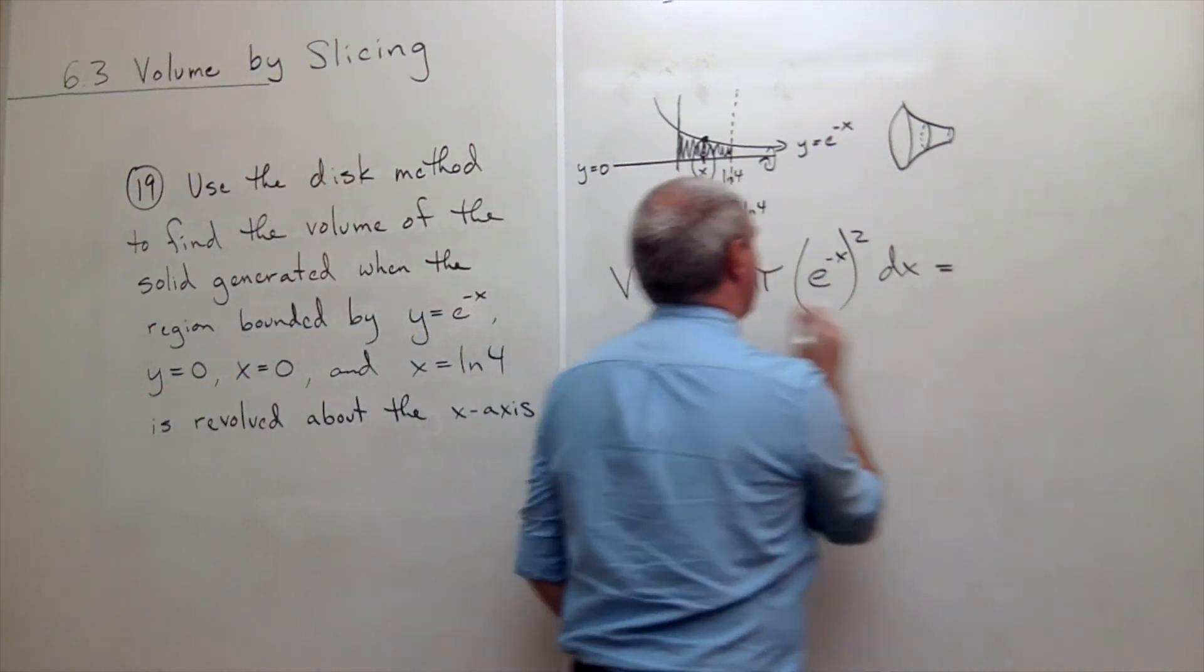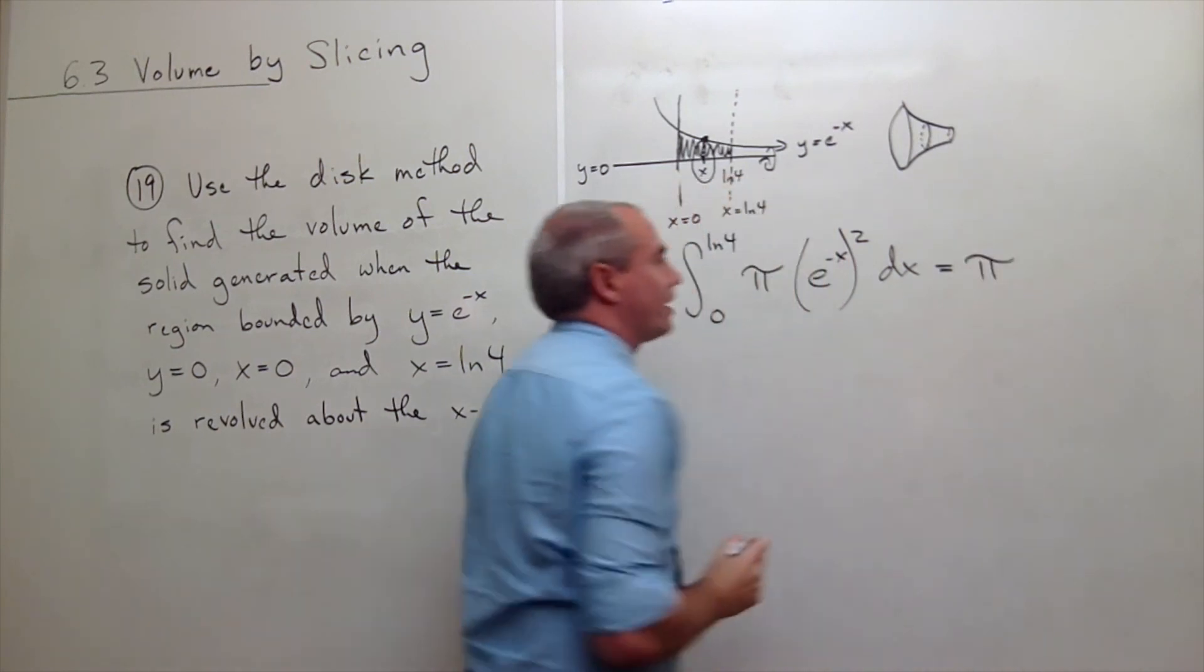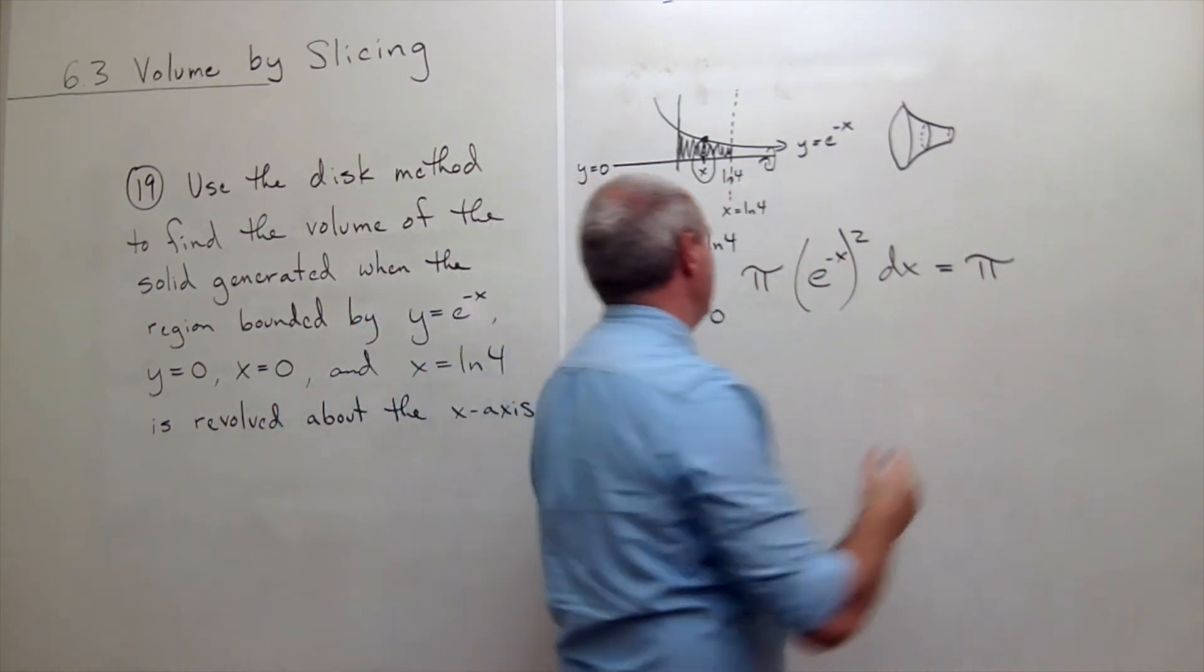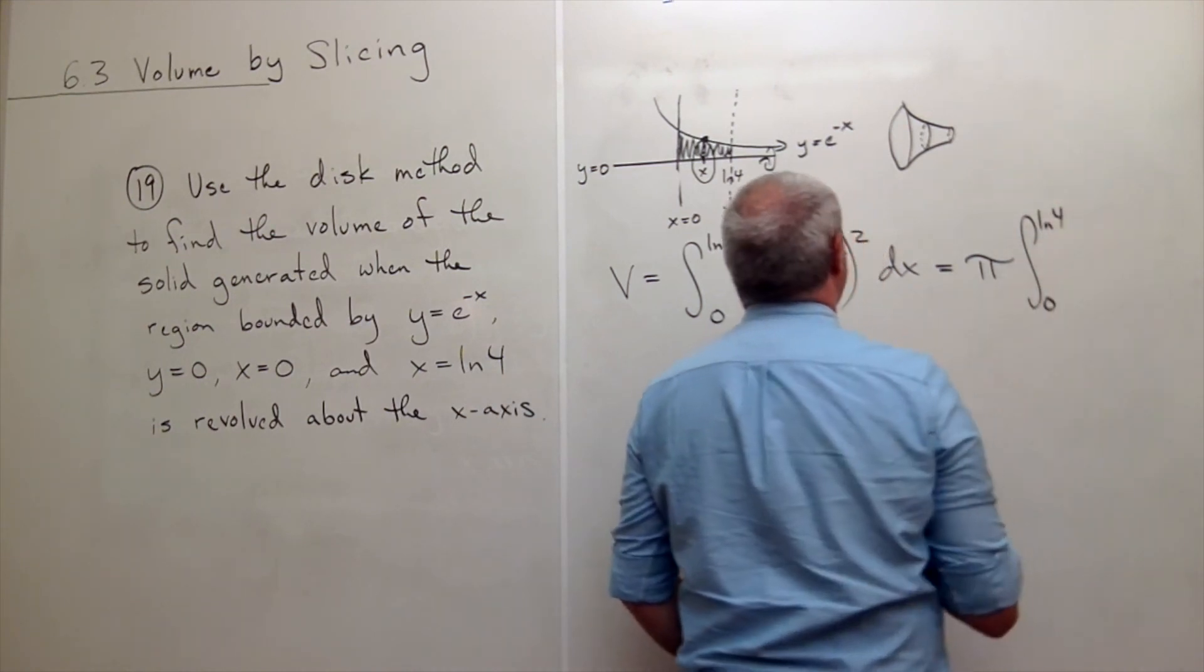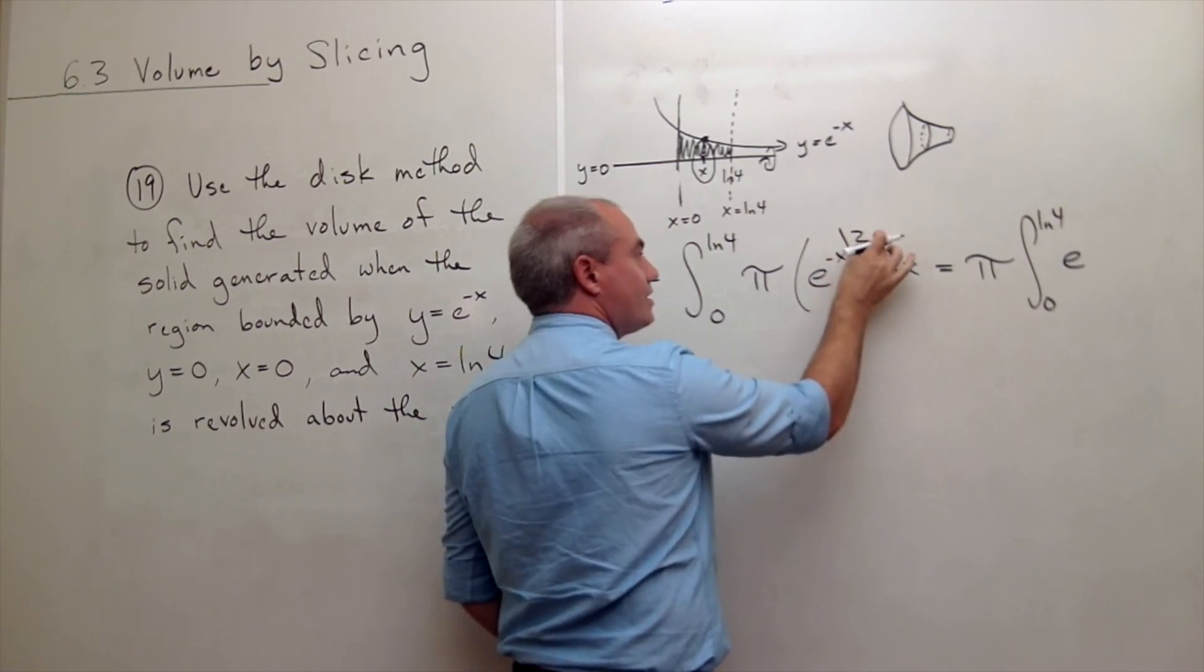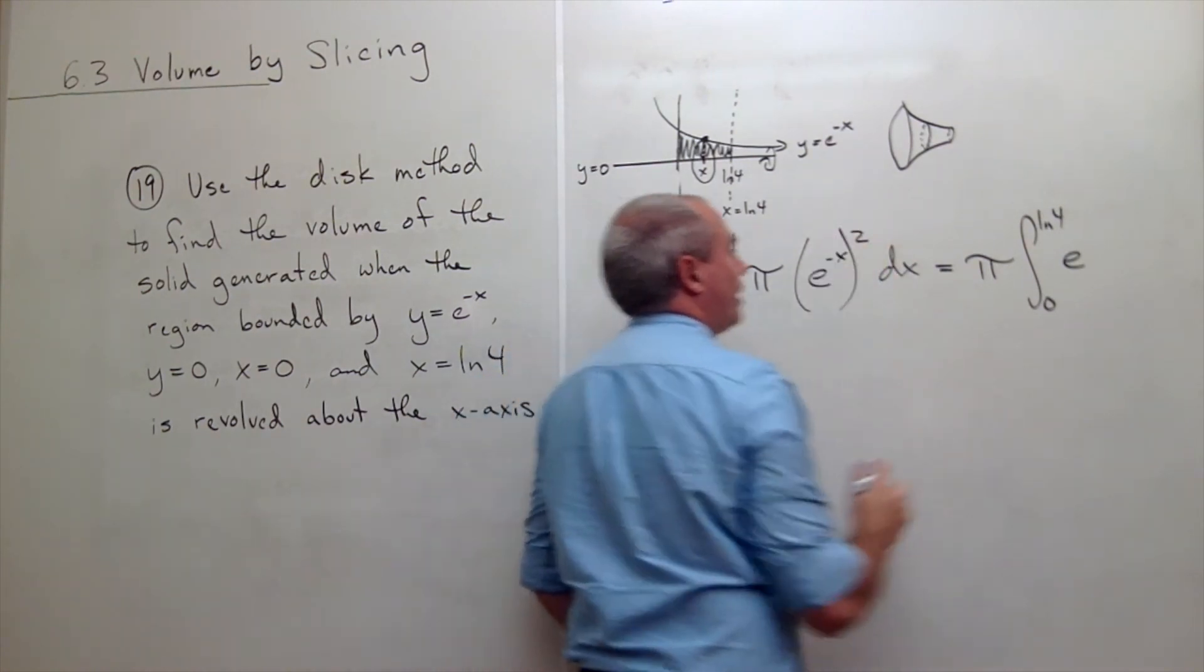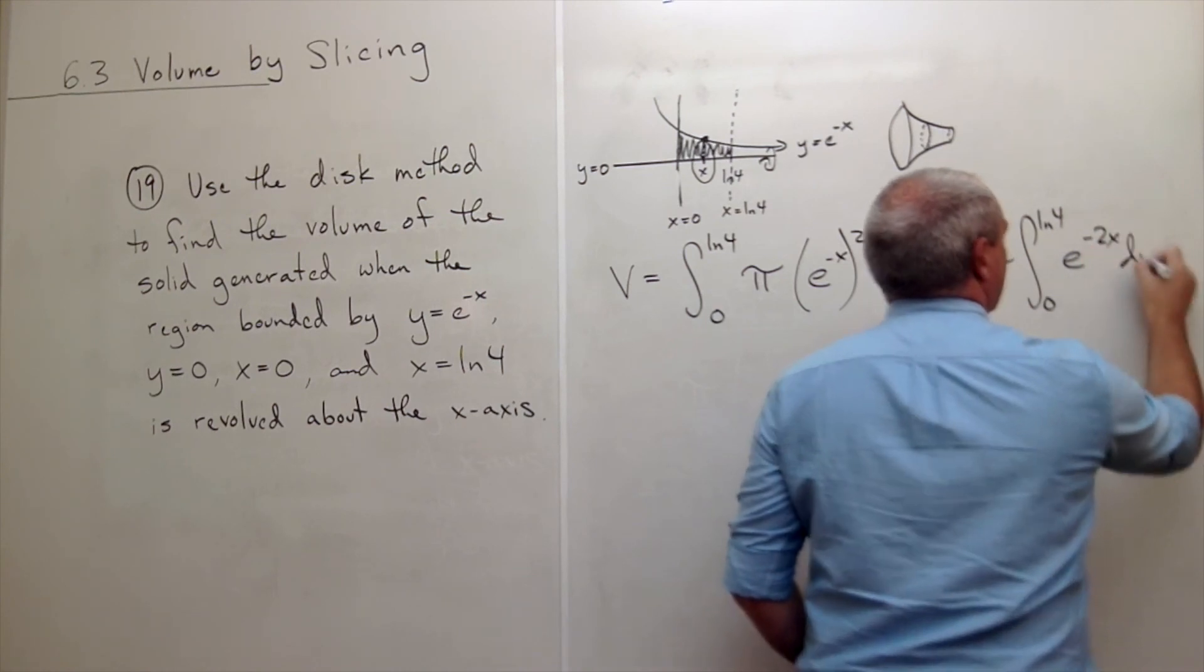The first thing I could do is let's just get the pi outside of the integral. It's a constant, so I can move it outside. So I have pi times the integral from 0 to ln of 4 of e. If I have an exponent raised to an exponent, I just multiply those exponents. So it's just e to the negative 2x dx.